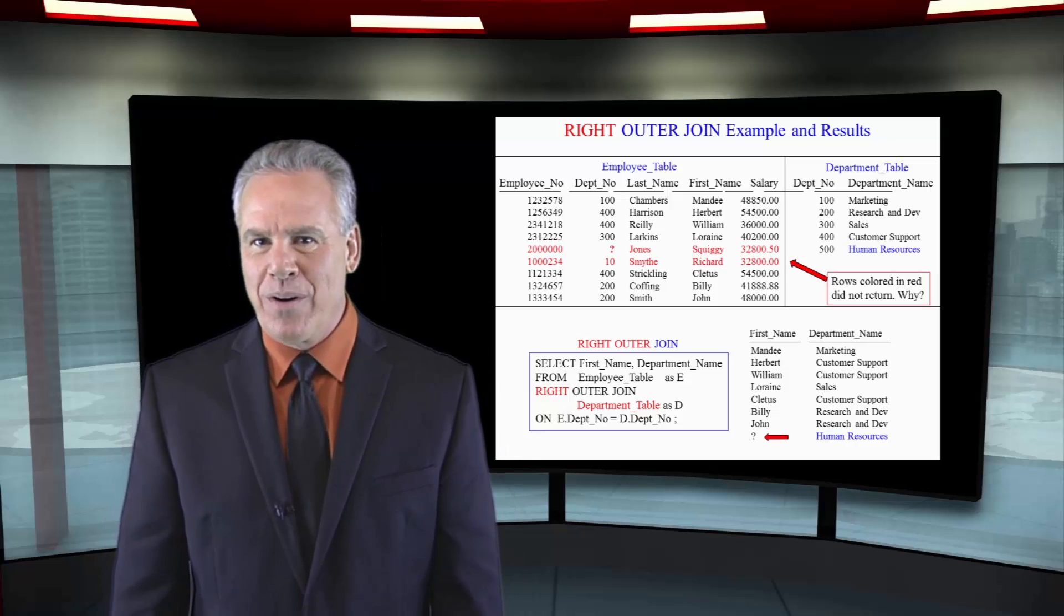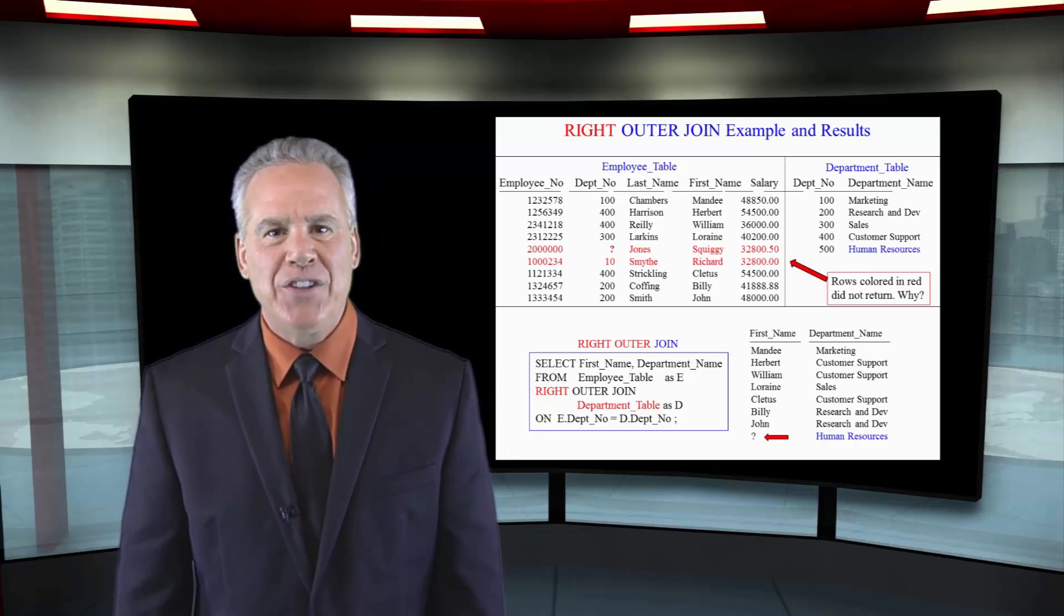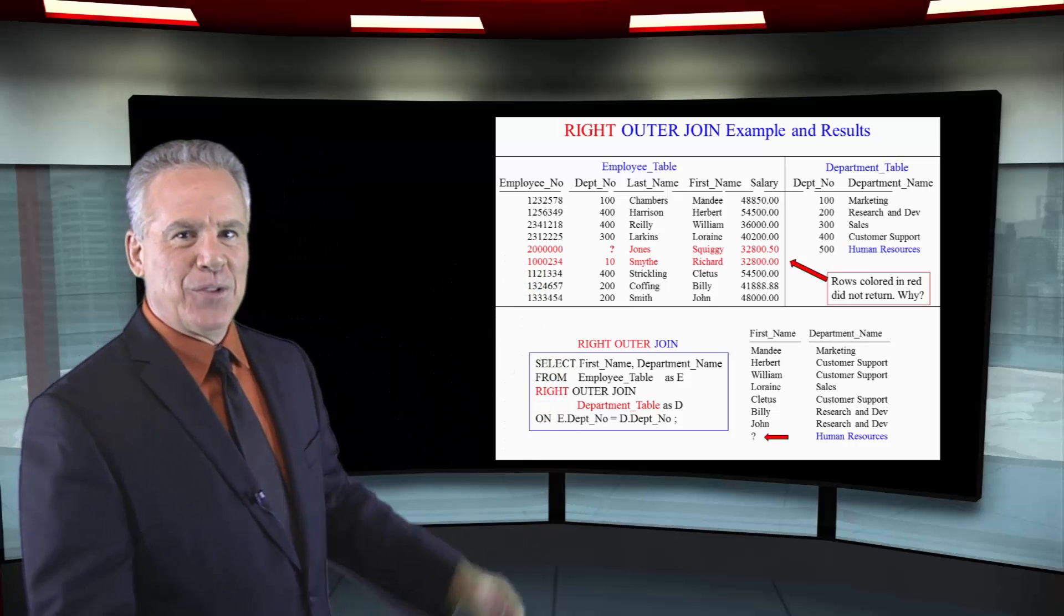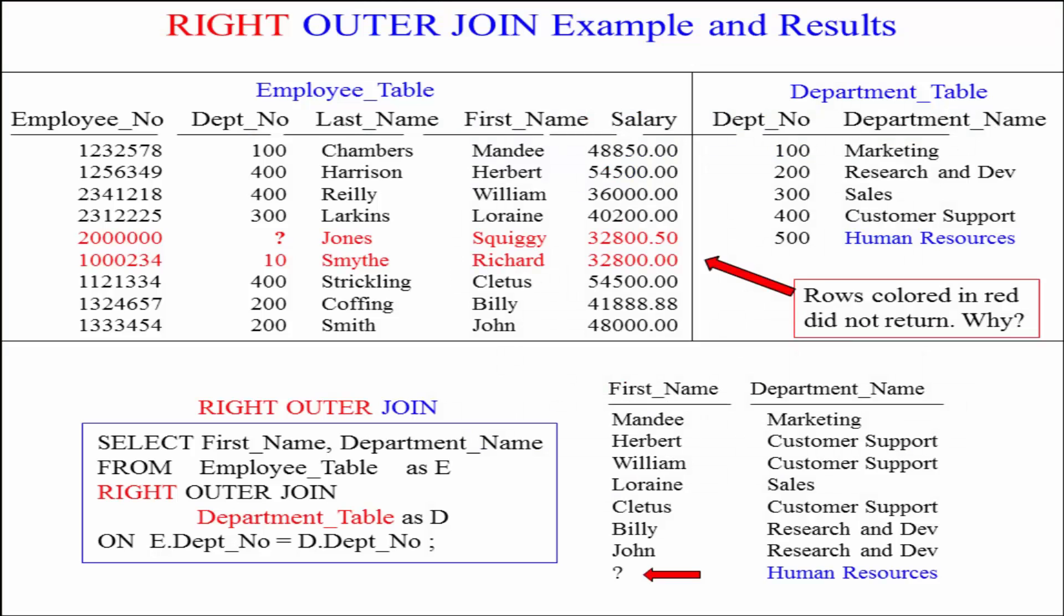As you can see in the report, it brought back all the matching first names with the department name they're in because it matched on E.DepNo and D.DepNo. Human Resources came back with a NULL value for the first name because there was nobody in there. That was a right outer join.